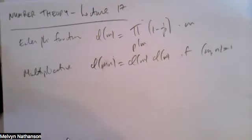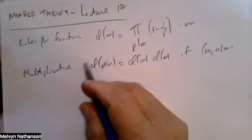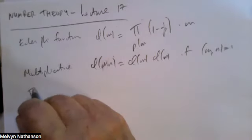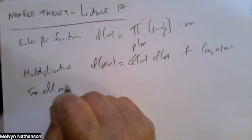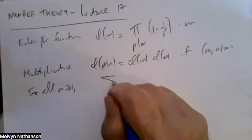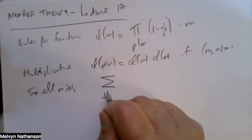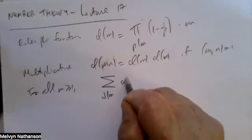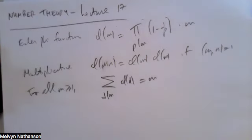And the third, which is a very interesting result: for all positive integers m, if we take the sum over all the divisors d of m of phi(d), that equals m.